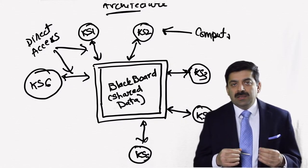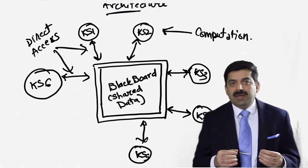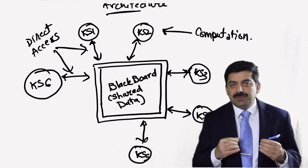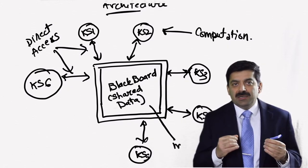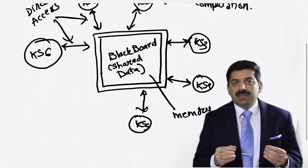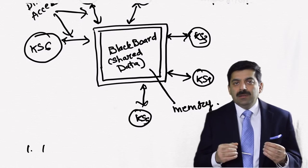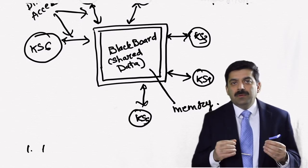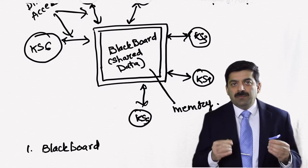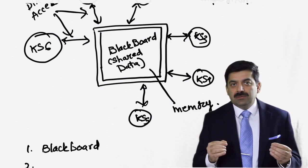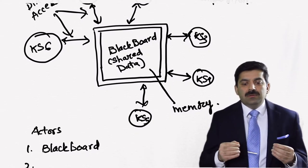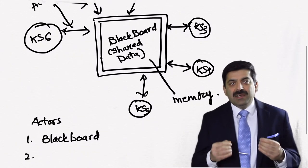Then there are knowledge sources components. These components do some processing based on some interesting event or data change in blackboard component. And finally control, the blackboard component decides which knowledge source to invoke, trigger, in which sequence, in what manner.